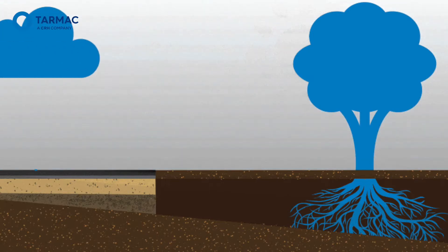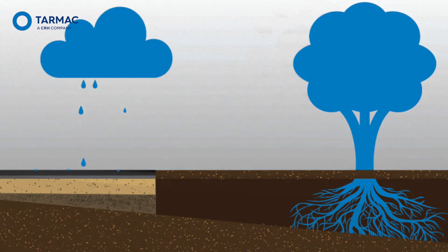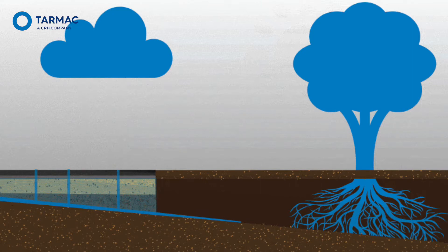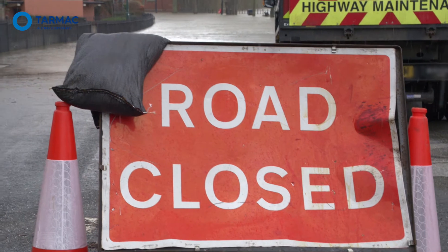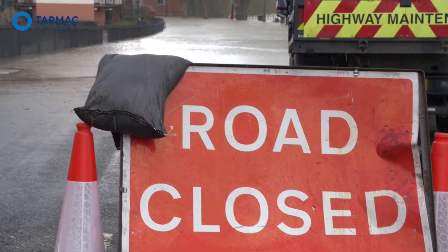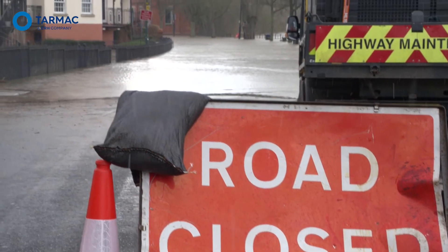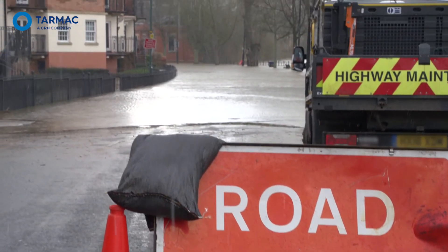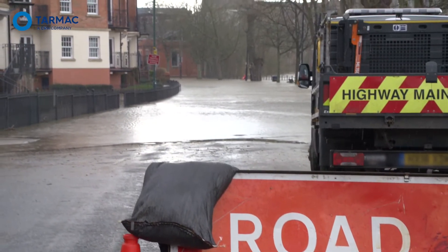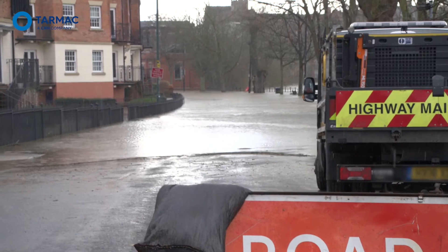SUDS pavements are ultimately about holding rainfall during thunderstorm events, where the excess water would normally overload conventional drainage systems, resulting in potential flooding either at the location or further downstream.